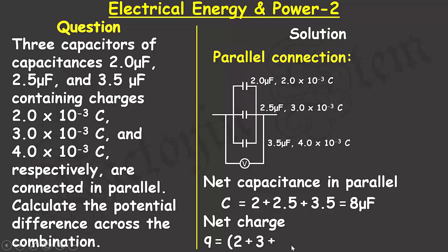the third is 4. Each of these values is multiplied by 10 to the power of minus 3, so I can just factorize it and write it out here, 10 to the power of minus 3. And the summation boils down to 9 times 10 to the power of minus 3 coulombs.